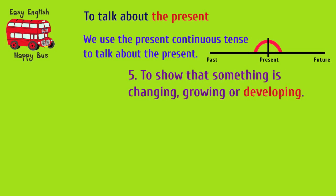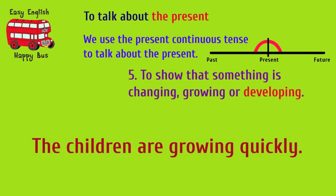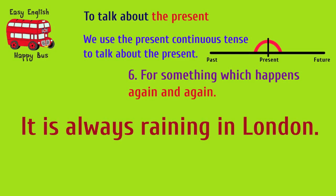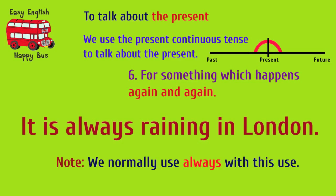To show that something is changing, growing or developing: 'The children are growing quickly.' For something which happens again and again: 'It is always raining in London.' Note: we normally use 'always' with this use.